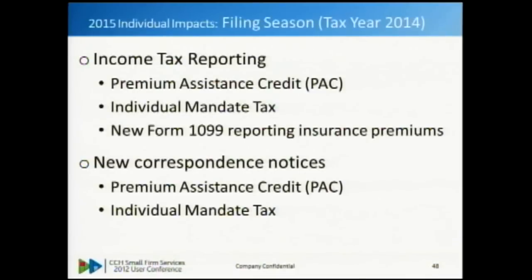2015 is where all of the reporting requirements from 2014 will be reported on the tax return: you're going to have new income tax reporting requirements, a new premium assistance credit form, an individual mandate tax form, and taxpayers with new 1099s from insurance providers, as well as documentation from the state exchanges about coverage and assistance received. Taxpayers who have never gotten a 1099 in their entire lives will get them, and those forms are due later than W-2s - so you're potentially in a situation of delayed or amended filing for taxpayers who historically file early, particularly low-income taxpayers.